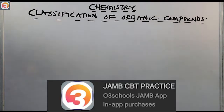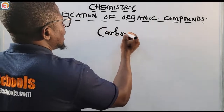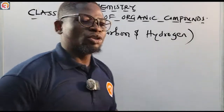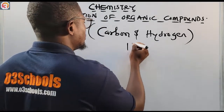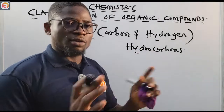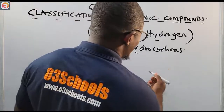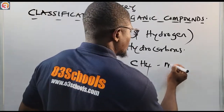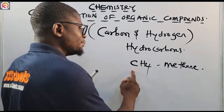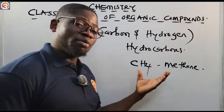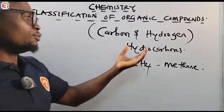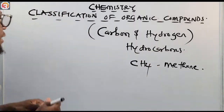So let us go to the classification of organic compounds. Some organic compounds contain carbon and hydrogen only — we call these hydrocarbons. An example is methane, which is the simplest alkane. Methane is a hydrocarbon because its formula contains just carbon and hydrogen.